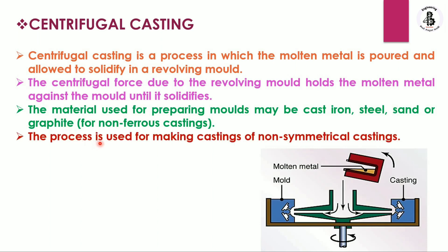This process is used for making non-symmetrical castings. If you want to make symmetric and hollow cylindrical castings, you should follow the true centrifugal casting process. If you want to make symmetrical solid castings, you should follow the semi-centrifugal casting process. But if you want to make non-symmetrical castings, you have to follow the centrifuging casting process.